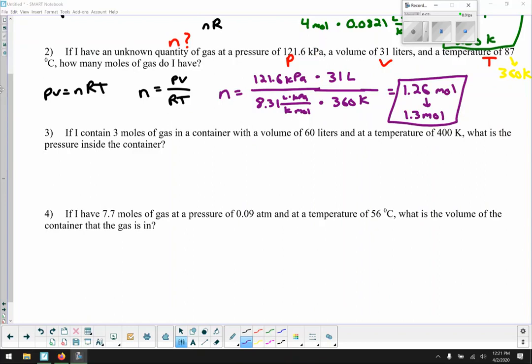Okay, looking at number three. If I contain three moles of gas, so that would be your N, your number of moles. In a container with a volume, so that's your volume, of 60 liters and a temperature of 400 kelvins. That's already in Kelvin, so we don't have to convert it. What is the pressure inside the container? So again, starting out with our ideal gas law, PV equals NRT. And we want to isolate P. So P equals NRT divided by V. Just divide both sides by V. And again, we have all these numbers.